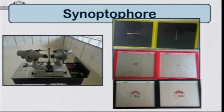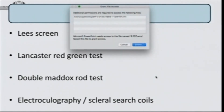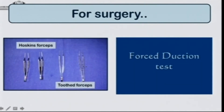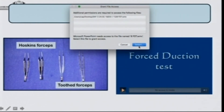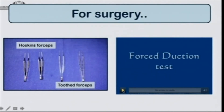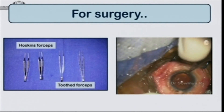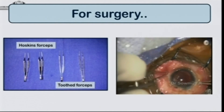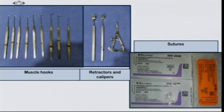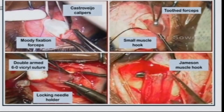The less commonly used items are the synoptophore for torsional measurements and the Lees screen and Lancaster red-green tests, which are optional. Before managing any squint, a forced duction test is needed to differentiate paralytic from restrictive strabismus and to plan which muscle to operate on — routine toothed forceps from the cataract surgery set work well for this. The squint surgical set includes muscle hooks such as Jameson and von Graefe hooks, retractors, calipers, 6-0 or 8-0 Vicryl sutures, and Moody's fixation forceps, which allow surgery without an assistant.